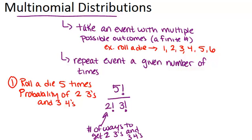Now we actually have to think about the probability. What's the probability of getting two threes? Well, the probability of each three is one sixth because there are six numbers on a die. So the probability of two threes will be one sixth to the second power. Then we're also picking three fours. The probability of each four is one sixth. So the probability of three fours is one sixth to the third power.